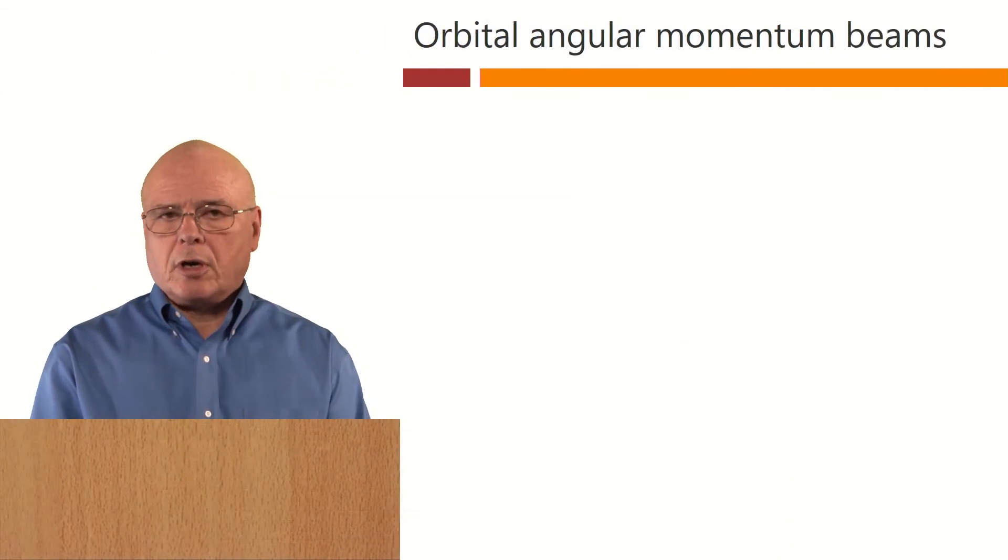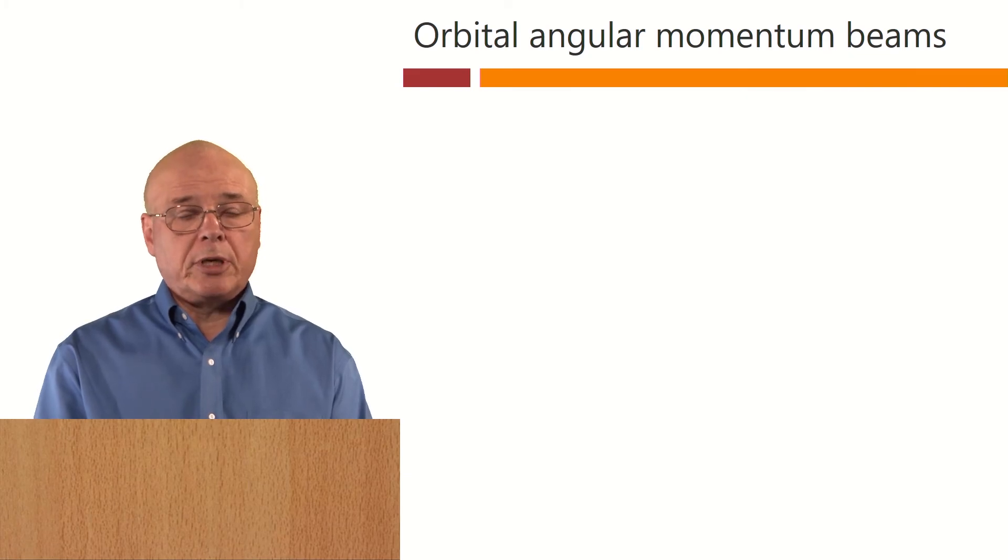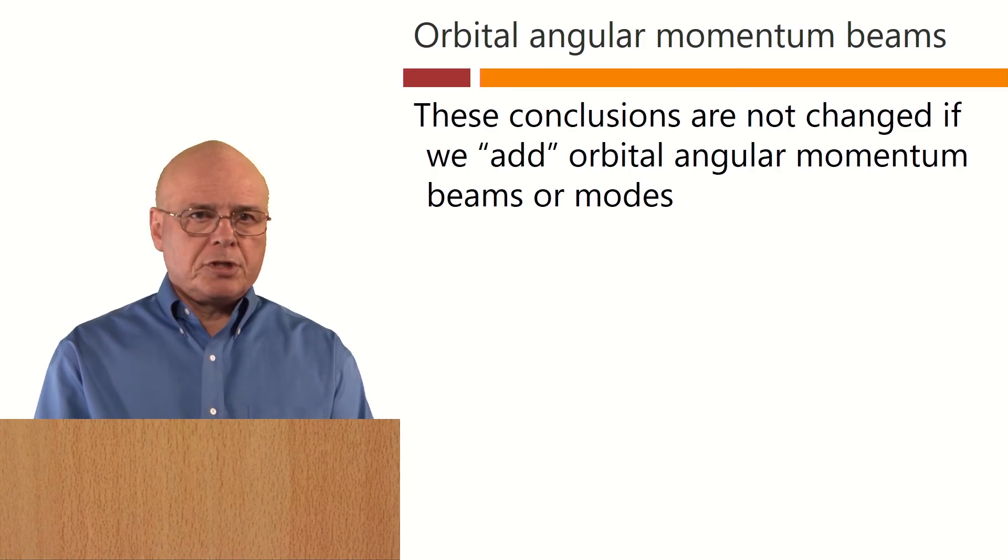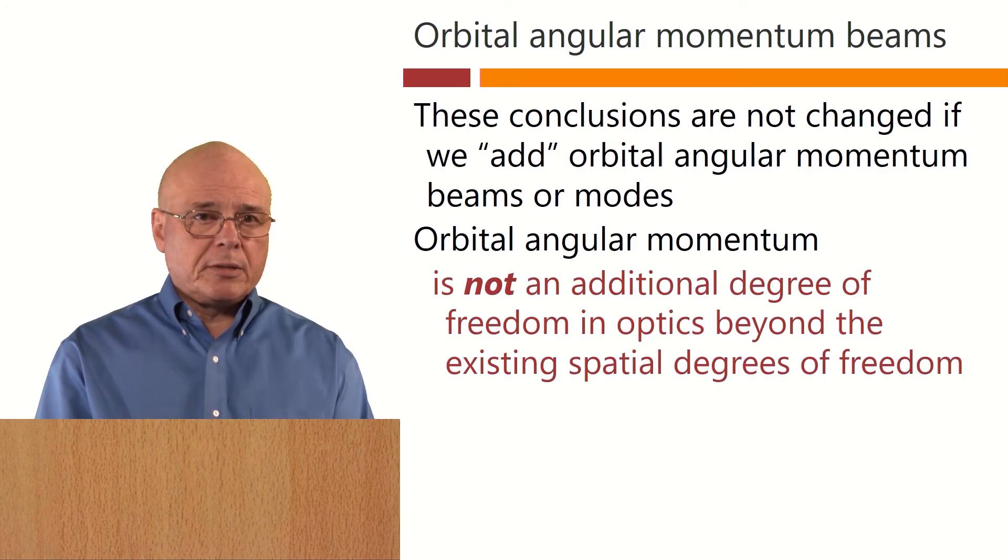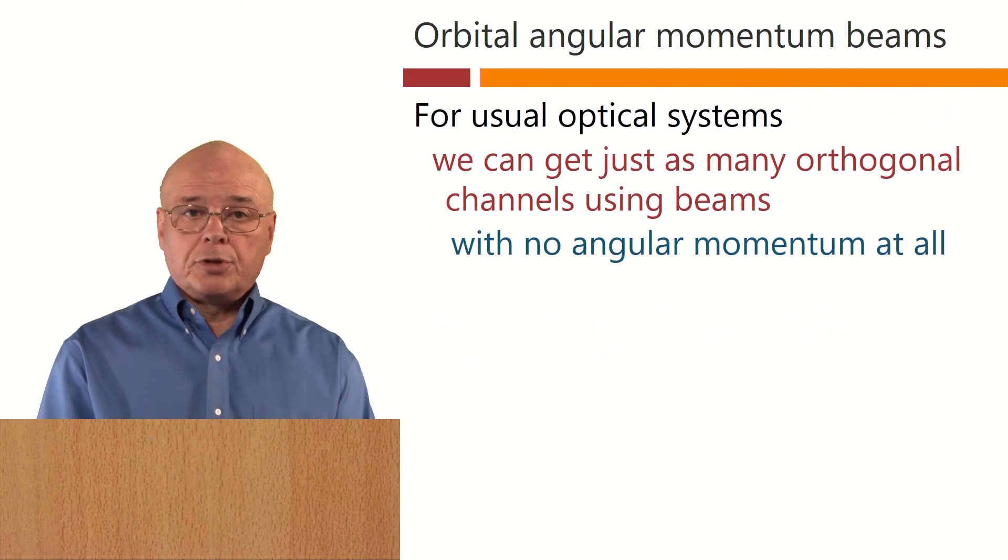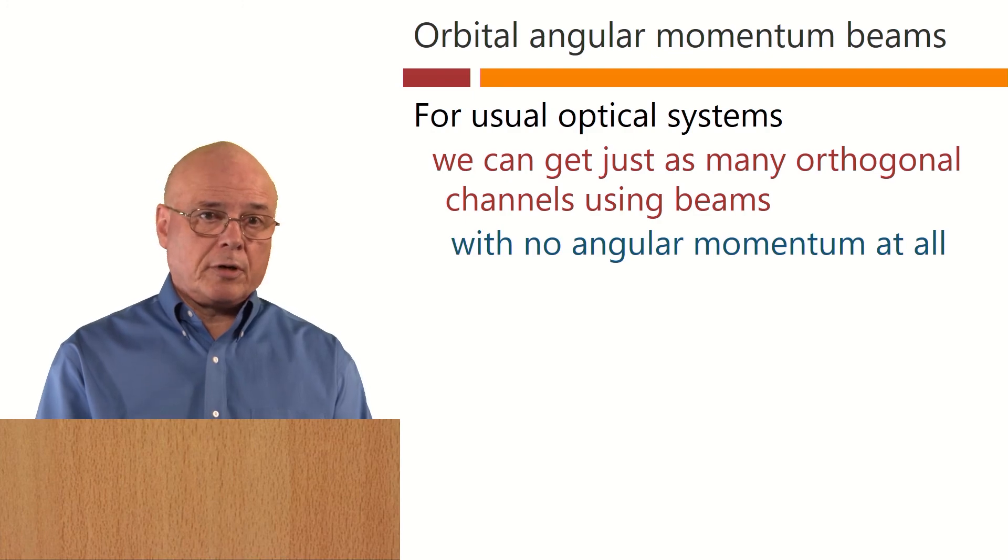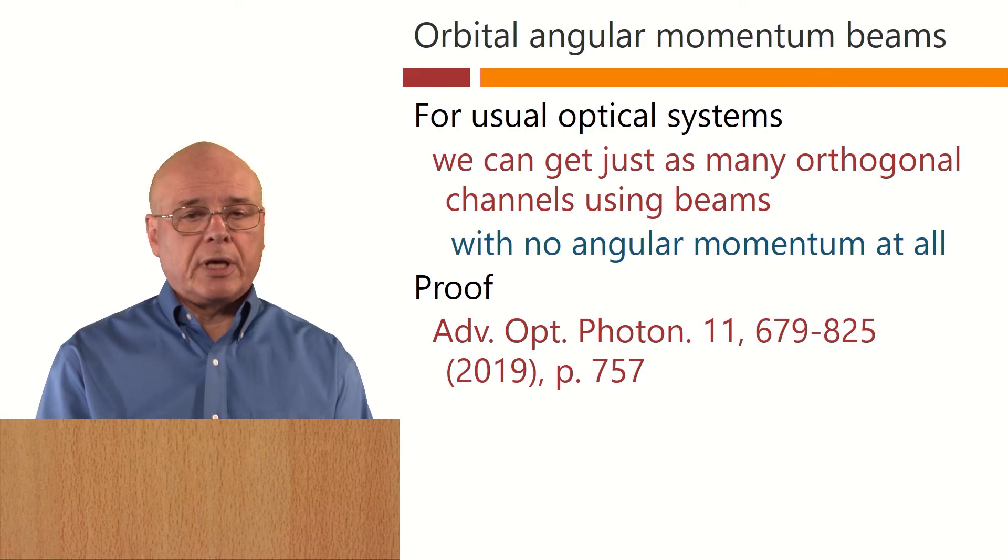Now, we should make some comment here about orbital angular momentum beams, because there's been a lot of confusion about this topic. The conclusions we have come to here about the numbers of channels available for communicating are not changed if we add in the idea of orbital angular momentum beams or modes. Orbital angular momentum is not an additional degree of freedom in optics beyond the existing spatial degrees of freedom. For usual optical systems, we can get just as many orthogonal channels using beams with no angular momentum at all, and the proof of that is given here.